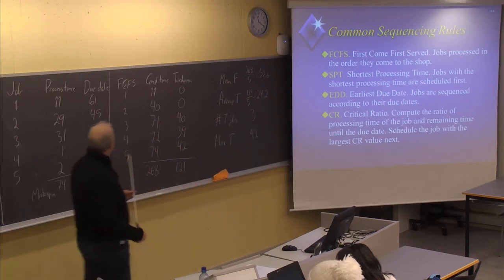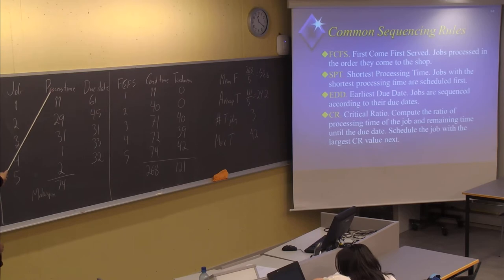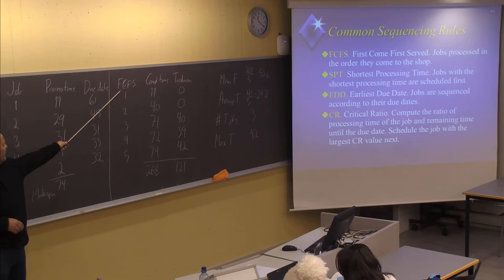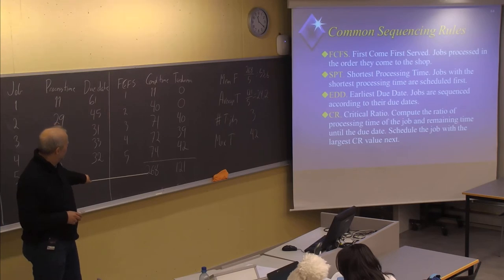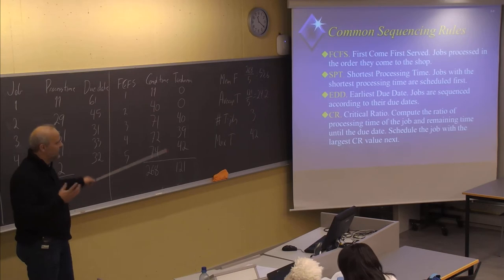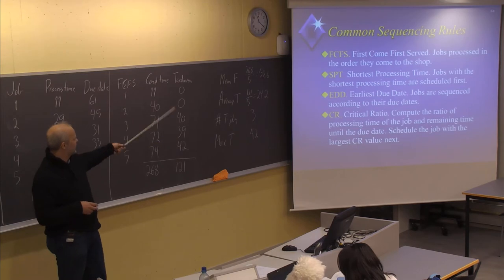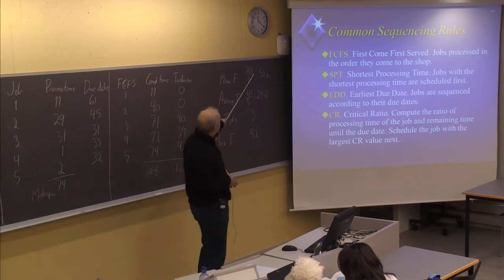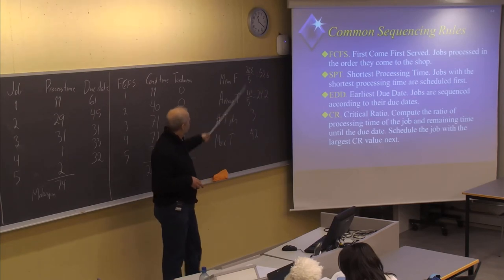We will continue on the different sequencing rules. We have now seen this problem with five different jobs, given processing time and given due date. When we use the first-come, first-served strategy, we have found the completion time, the sum of the completion time, also called the sum of the flow times, and the tardiness, which is the number of days delayed. We have found values for this particular sequence with four different measurements.